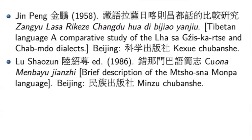Here's an example. We have Jin Peng — Jin is the surname and Peng is the personal name. 1958. Then we have the characters, then the title in italics because it's a book title, and then brackets with the title translated into English — you don't need to put that translated title in italics. Then Beijing — generally speaking there's no need for Chinese characters in place names because it's called Beijing in English and in Chinese. Then the publisher in characters and in Pinyin. You don't need to translate the publisher's name; it's not going to help anyone find the book. So don't translate the publisher's name.